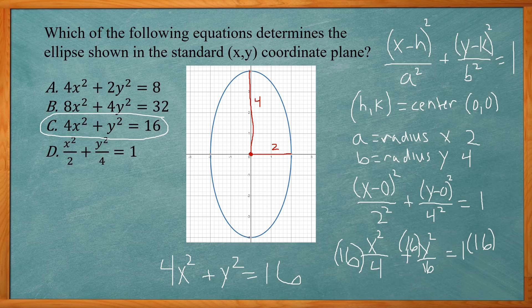So to solve this problem, you need to know the equation of an ellipse: (x-h)² over a² plus (y-k)² over b² equals 1, where a is the radius in the x direction and b is the radius in the y direction.